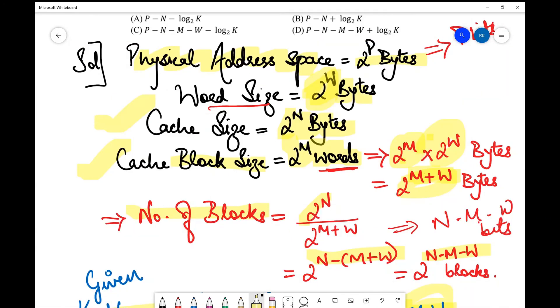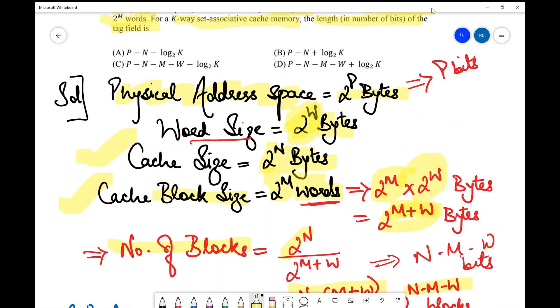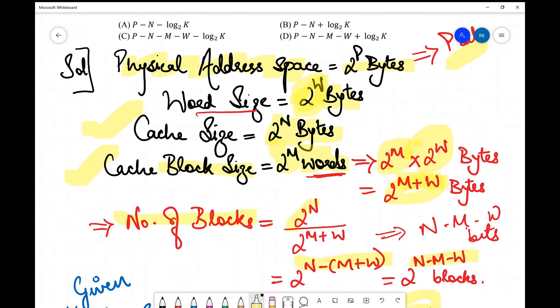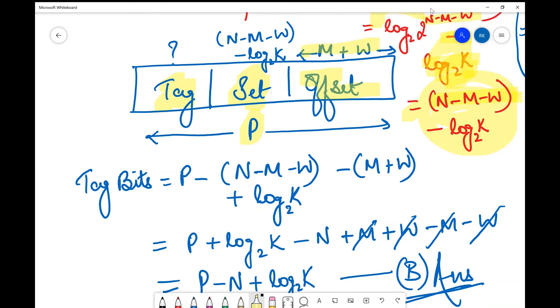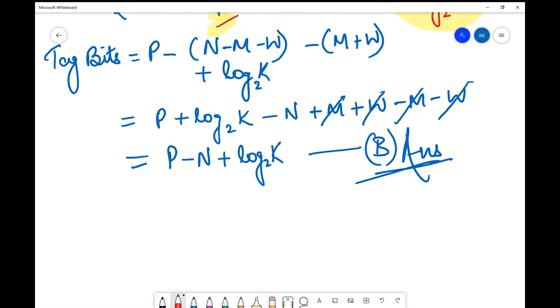So the tag bits will be p minus this entire thing. That is p minus (n-m-w-log₂k) minus (m+w). When you solve this out, it comes out to be p-n+log₂k, which is option B in our case. This may vary depending upon your set.